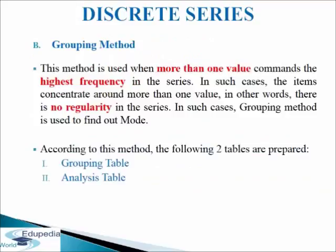Next we come to the grouping method. This method is used when more than one value commands the highest frequency in the series. In such cases the items concentrate around more than one value; in other words, there is no regularity in the series. In case of irregular frequency distribution, mode is not always the value which occurs most frequently. In such cases the grouping method is used to find out mode. According to this method, the following two tables are prepared: first is the grouping table, and second is the analysis table.